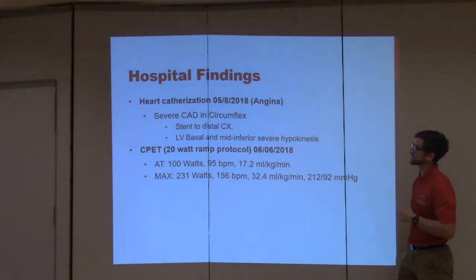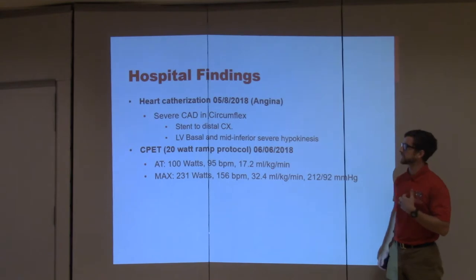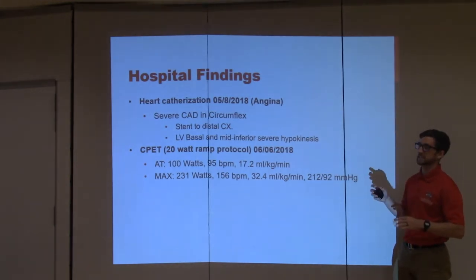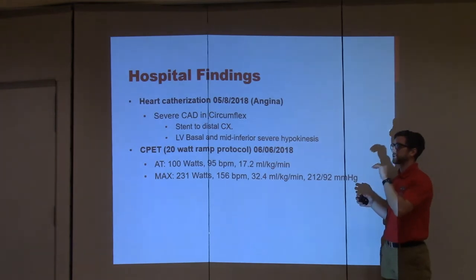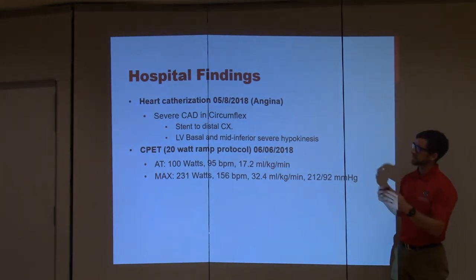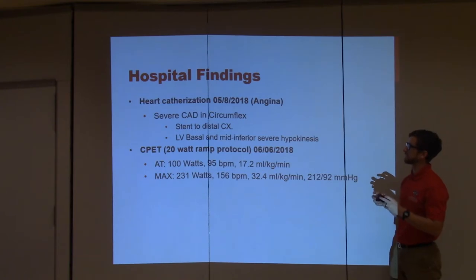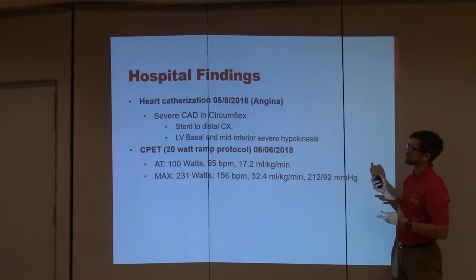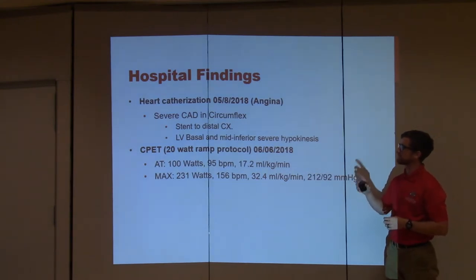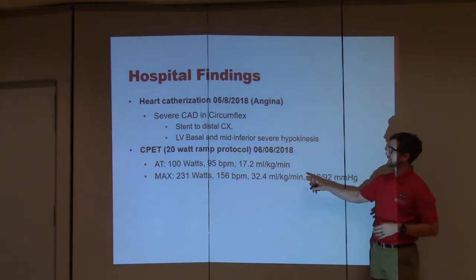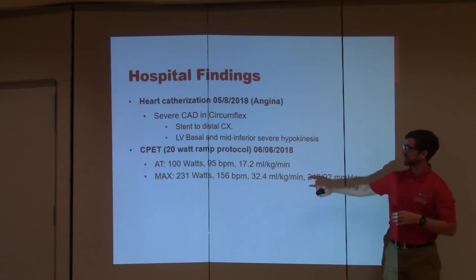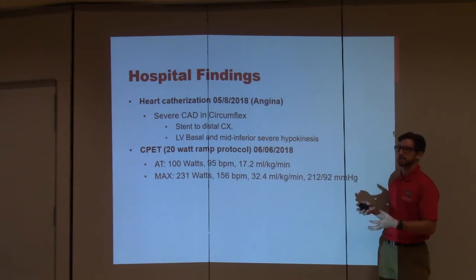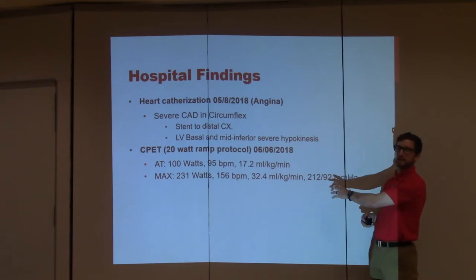In 2018, he comes to the hospital with angina again — chest is hurting. Severe coronary artery disease to the circumflex again, but this time they can stent it, so they stent the distal circumflex. He also shows left basal severe hypokinesis — not contracting as hard. They do a CPET; his anaerobic threshold values and max values are noted. Everything is fairly normal for a cardiac patient, nothing out of the ordinary, but this is what we use for our exercise prescription.